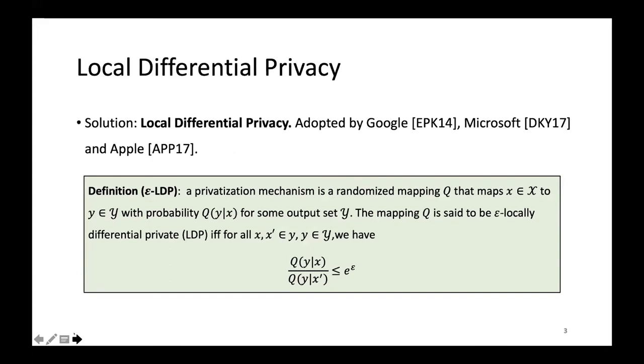A popular solution is local differential privacy, which has been adopted by several technology organizations, including Google, Microsoft, and Apple. Differential privacy is one of the most popular, powerful definitions of privacy. We consider local differential privacy here, where users privatize their data by some mechanism before releasing it so as to keep their personal data private, even from the data collectors. More specifically, a privatized mechanism Q is a random mapping with some transition probability. The mapping Q is said to be epsilon locally differential private if for all x, x prime, and y, we have Q(y|x) over Q(y|x') is less than e to the epsilon. So given the privatized sample y, it's harder to tell whether it's from x or x prime, in which sense the privacy is protected.